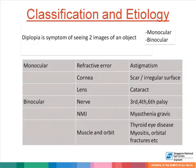Binocular diplopia is defined as double vision that is obliterated upon occlusion of the second eye. Binocular diplopia is usually neurological. It can be due to effects of the neuromuscular junction such as myasthenia gravis, or problems with the extraocular muscles, or lesions in the orbit such as thyroid eye disease, myositis, orbital fractures, tumors, et cetera.